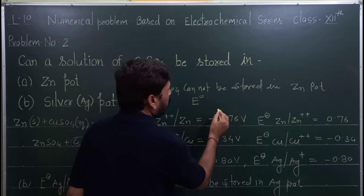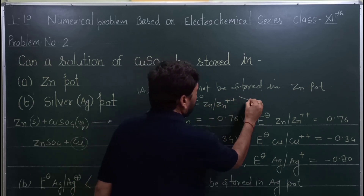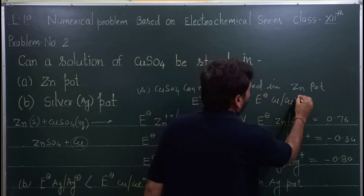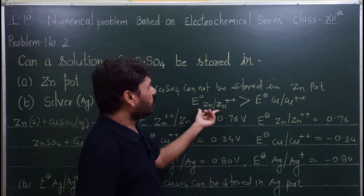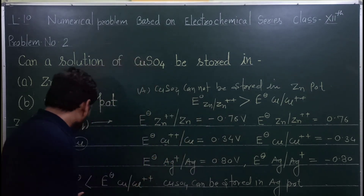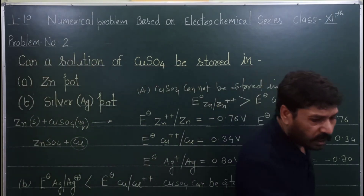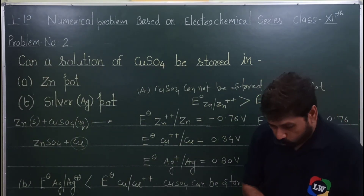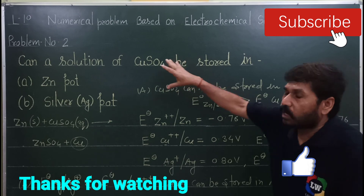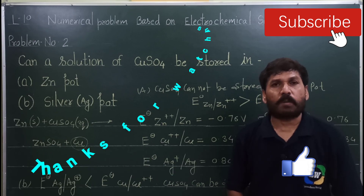इसे इस form में लिख सकते हैं: E naught (Zn/Zn2+) > E naught (Cu2+/Cu) — zinc का oxidation potential copper से ज़्यादा है, इसलिए इसमें store नहीं कर सकते। इस type के numericals की practice कीजिए और comment box में बताइए कि numericals आपको कैसे लगे। यह question देखते ही 30 seconds में solve किया जा सकता है। So thank you very much, next lecture will be continued.